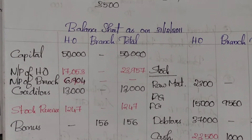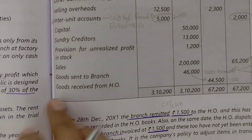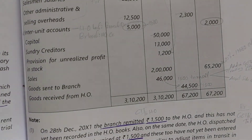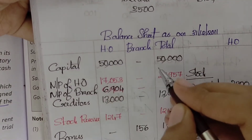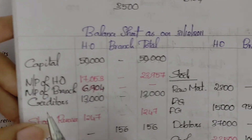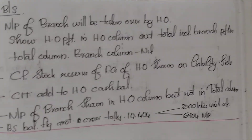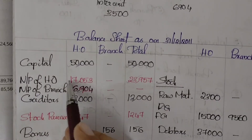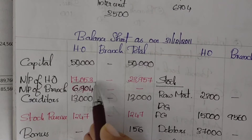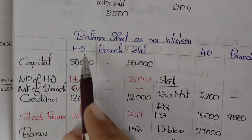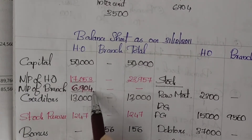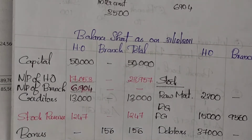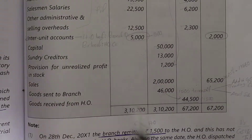Net profit is carried to the balance sheet. First item on the balance sheet: capital is 50000 for head office, total 50000. Net profit of the branch is taken over by the head office. Head office takes over branch net profit of 6904. Total net profit is 23957 for the entire business.